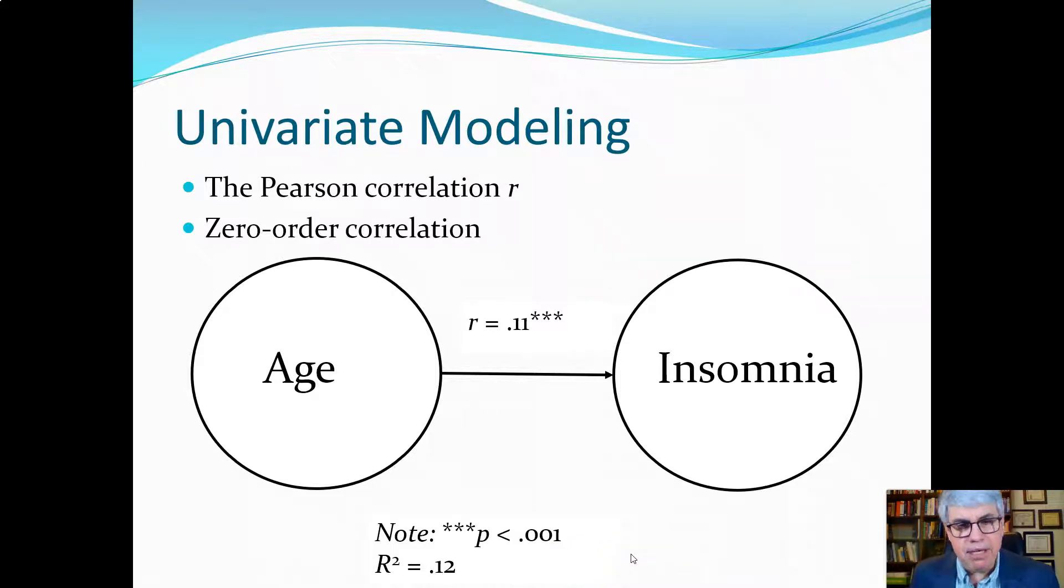We're going to report the Pearson r, sometimes this is called a zero order correlation. So we have age as one variable here predicting insomnia and we've got the r written there equals 0.11 and three stars for less than 0.001. Here we have r squared equals 0.012. What does this mean? That means as people get older they have more insomnia. Age doesn't predict most insomnia but it predicts about 1.2 percent.